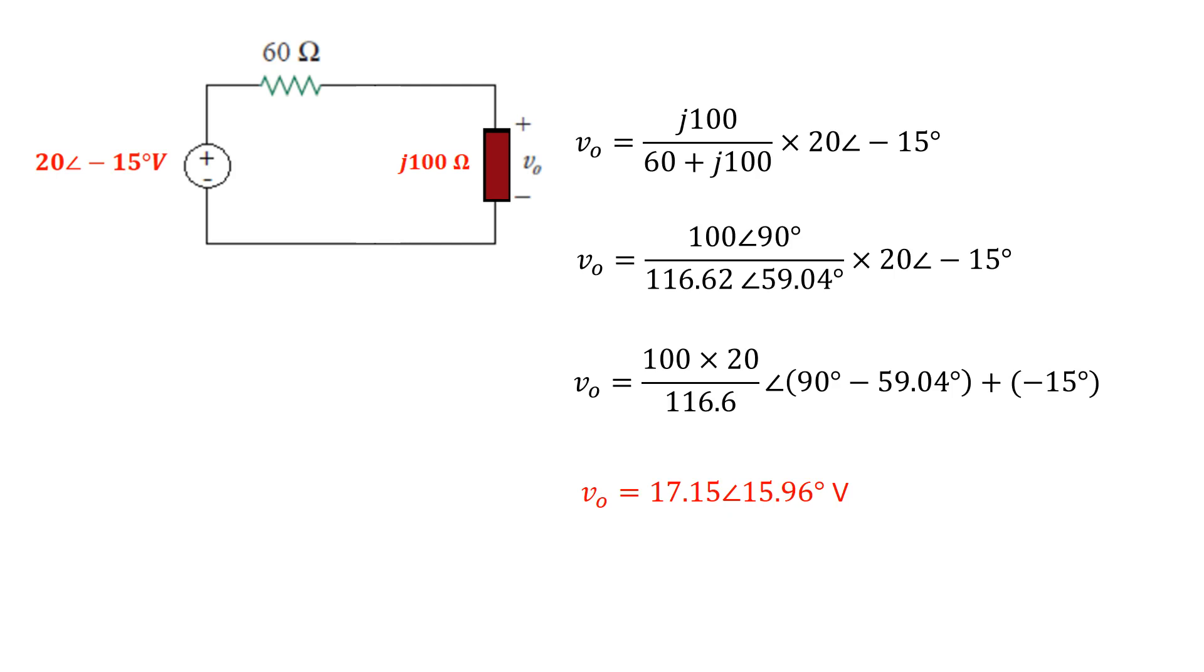So this is the phasor representation of that voltage V0. Now if you want to convert that to the time domain, our omega was 4, so we can write this as 17.15 cosine 4t plus 15.96 degrees volts.